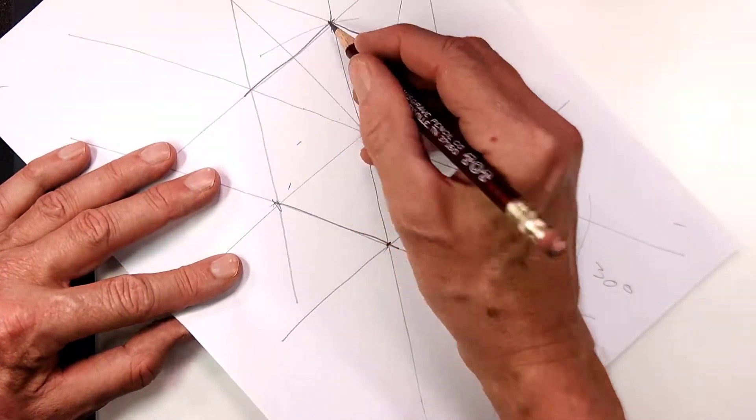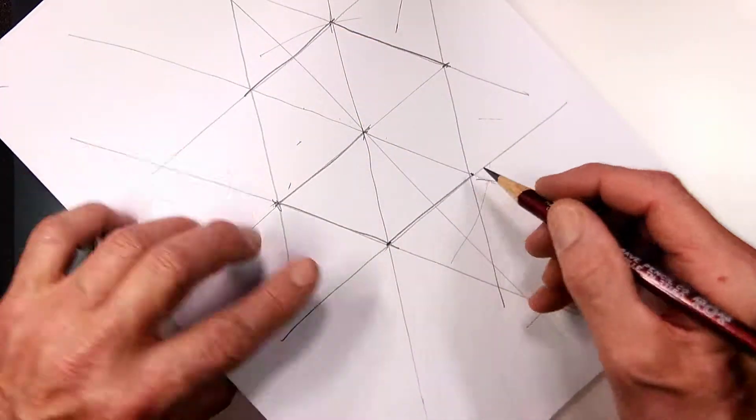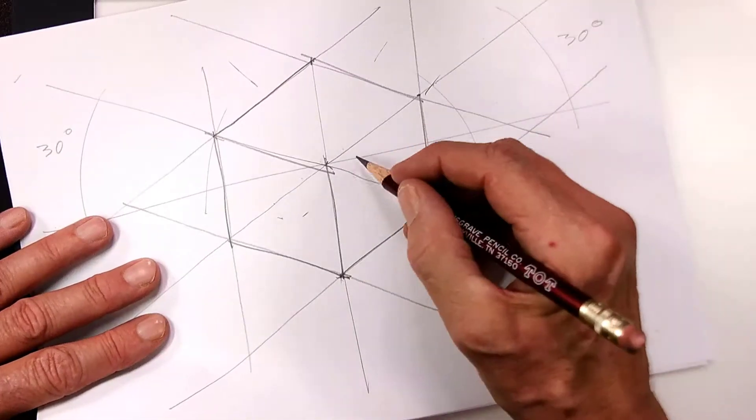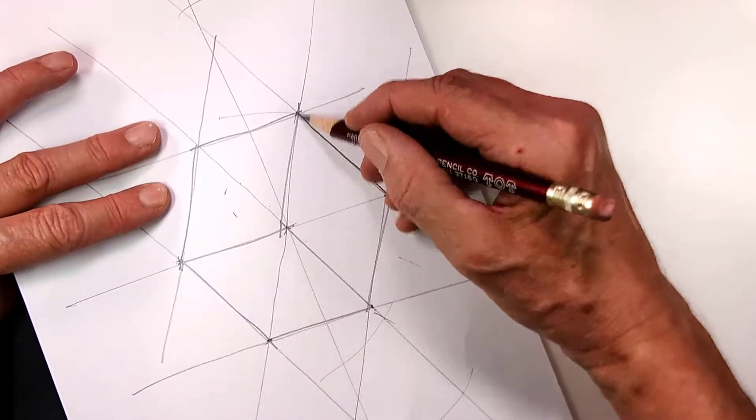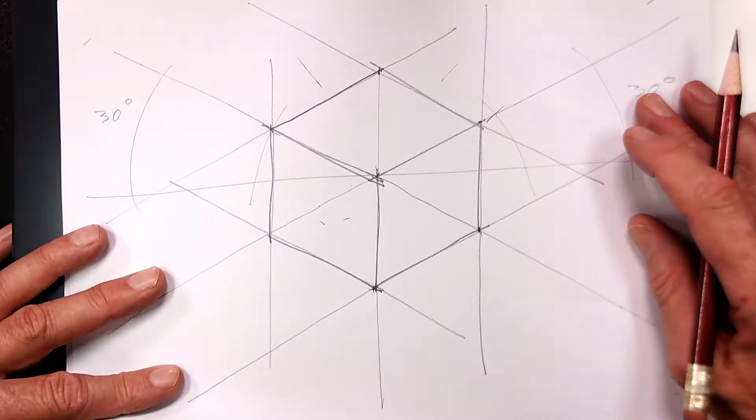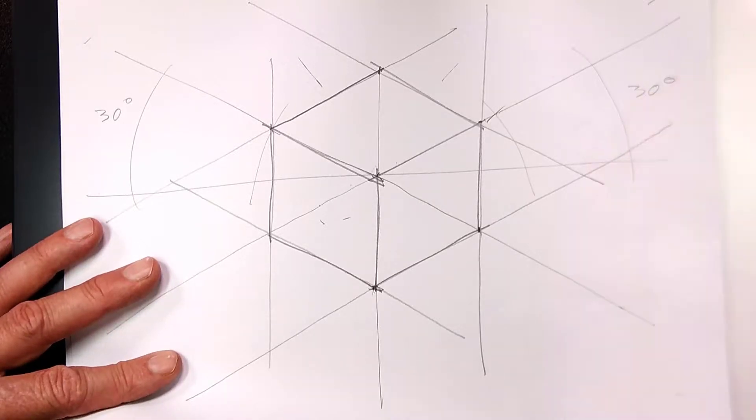And you can darken the edges like this. And that ladies and gentlemen is a cube that is drawn in isometric projection. Now let's do this.